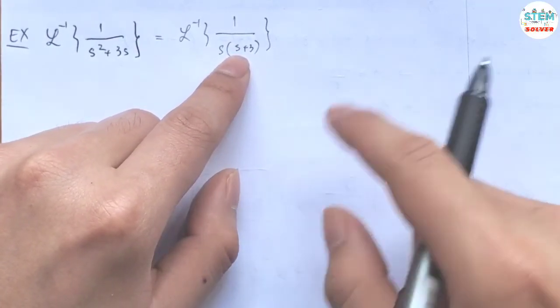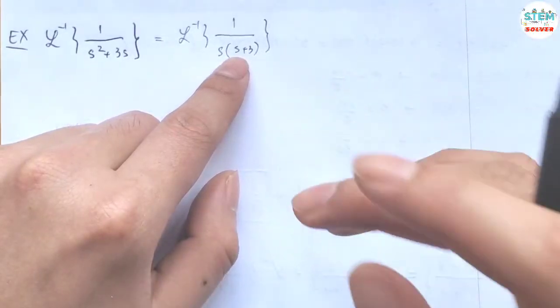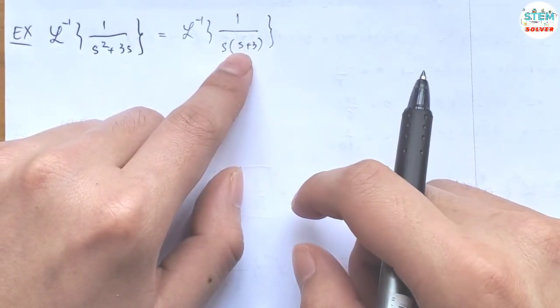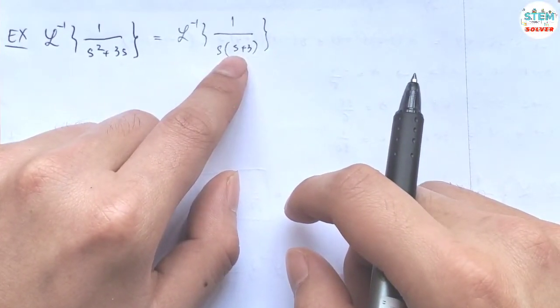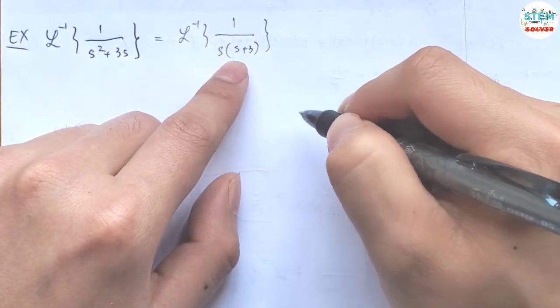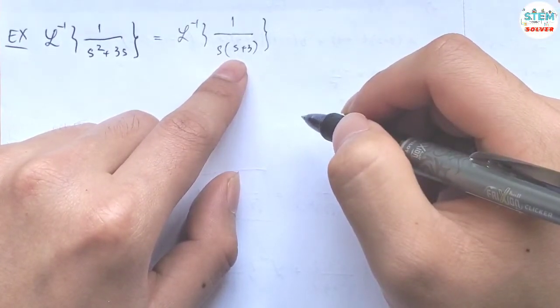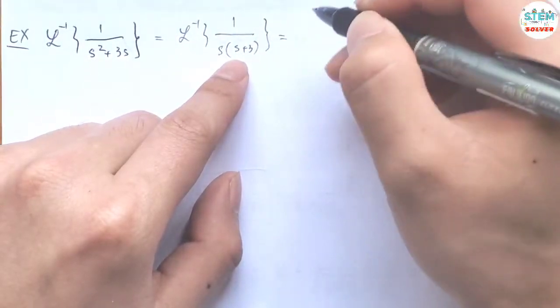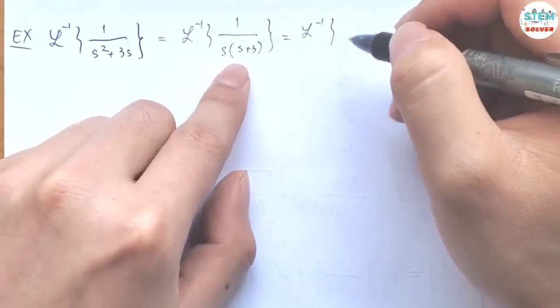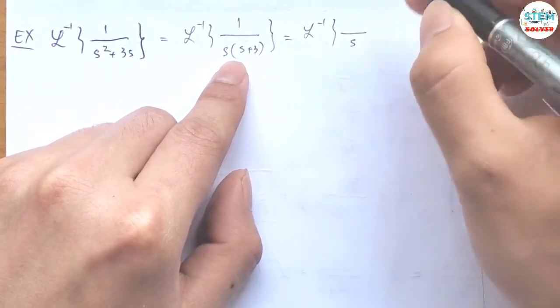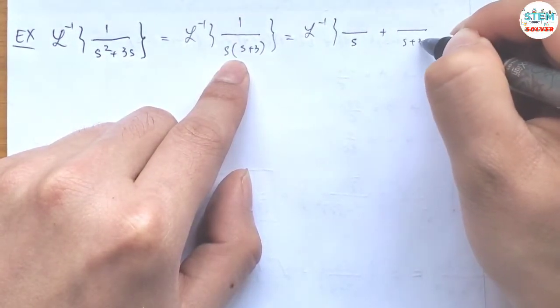But in this case, I'm not going to use the long method. Instead of using the long way, I'm going to give you the shortcut of finding partial fraction. So for this one, let me rewrite it. And for the partial fraction, we need to have s plus s plus 3.